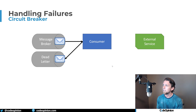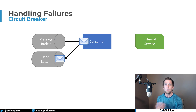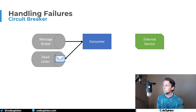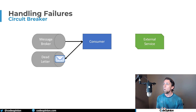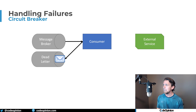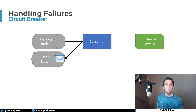Instead, what we can do is add a circuit breaker, so that when our consumer gets a message that needs to interact with that external service, it's not even going to try — it's just going to immediately move that message to the dead letter queue. After a period of time that we set, once we get a message again, we can interact with the external service to see if it's available. If it isn't, back to the dead letter queue. If it is, then all new messages will try to use that external service.